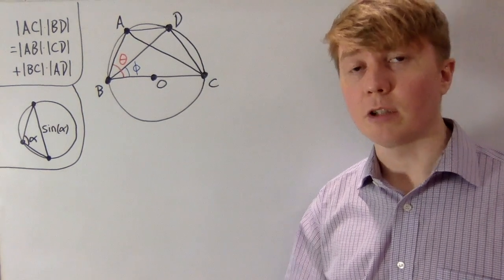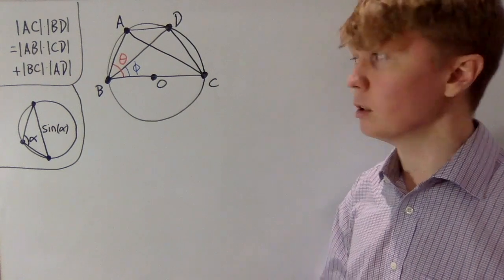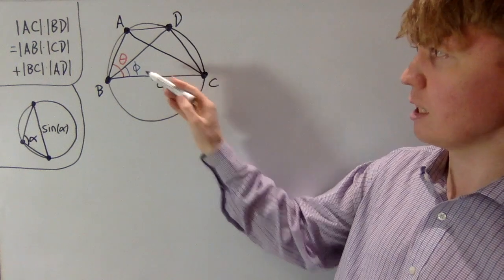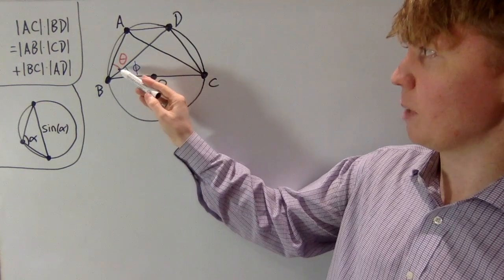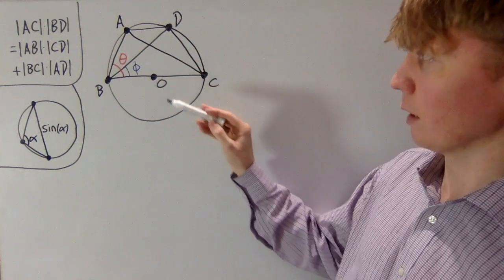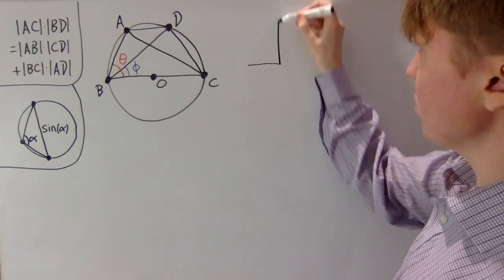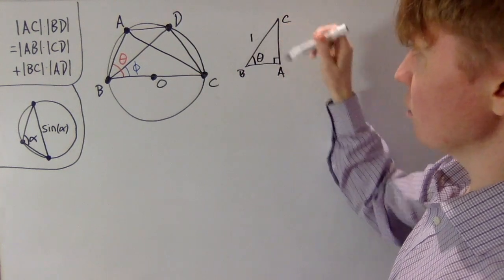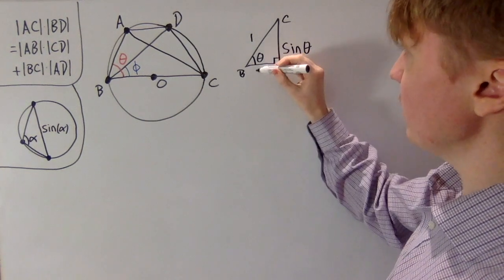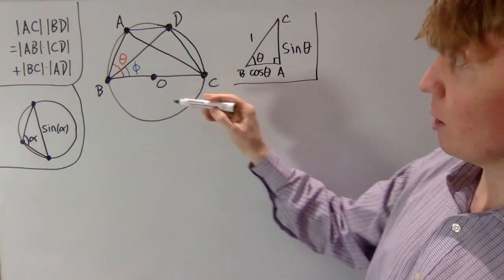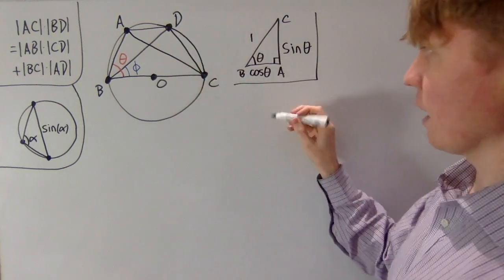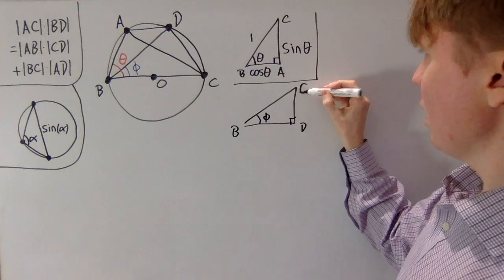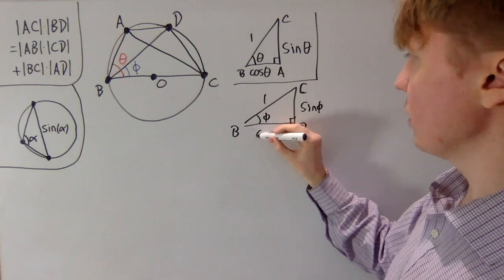The proof of the difference formula requires a slightly different geometric setup. Now BC passes through the centre of the circle as the diameter, with length 1, and all of the cyclic quadrilateral lies on one side of the diameter. Angles theta and phi are placed so that angle ABD equals theta minus phi. As before, triangle BAC gives a right angle at A, so AC equals sine theta and BA equals cos theta. Similarly, triangle BDC has a right angle at D, giving DC equals sine phi and BD equals cos phi.